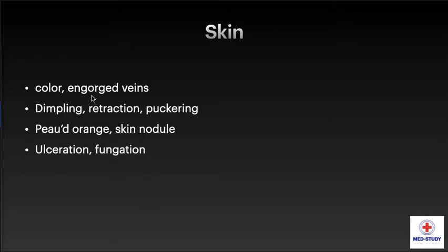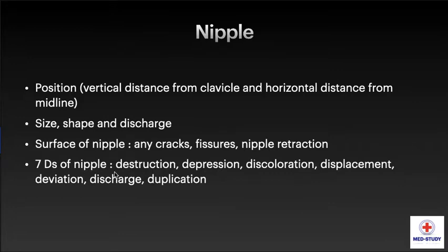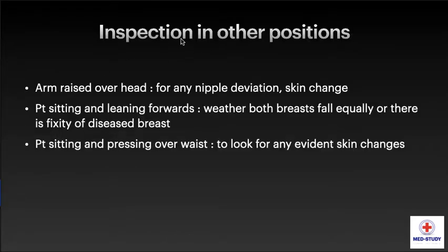We have to look at the skin over the breast for color, engorged veins, dimpling, retraction, puckering, peau d'orange skin, nodule, ulceration, and fungation. For the nipple, look for position, vertical distance from clavicle, horizontal distance from midline, size, shape, discharge, surface, cracks, fissures, and nipple retraction. There are seven D's of the nipple: destruction, depression, discoloration, displacement, deviation, discharge, and duplication.